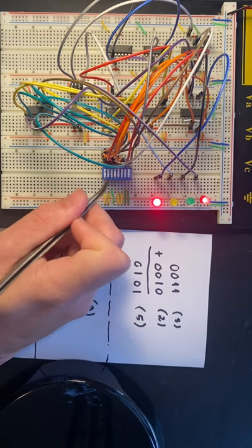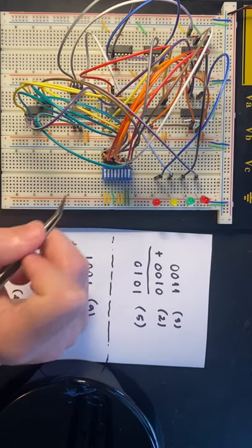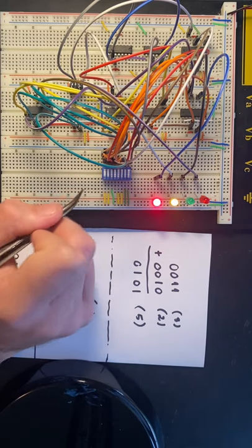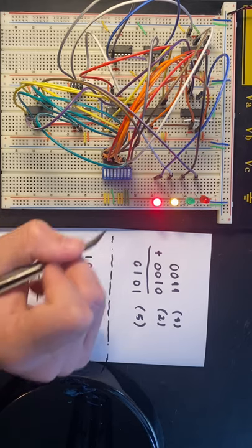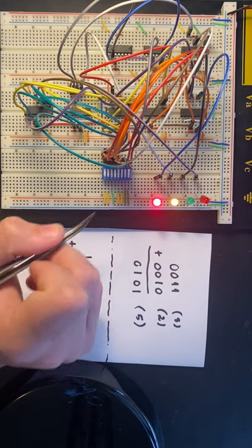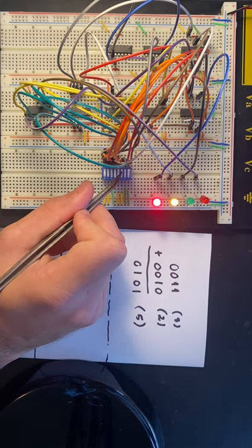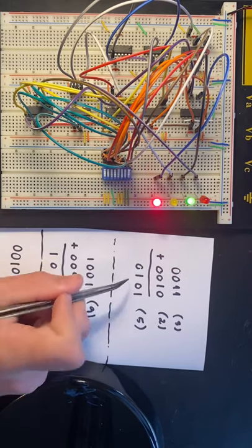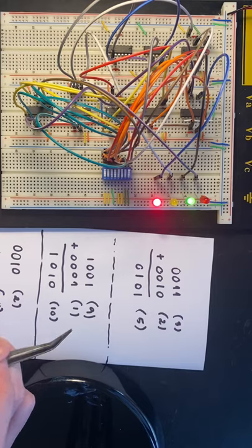Let me just reset again. We put in three here, which is 1100, and we put two for the second number, which is 01. As you can see, we get 0101, which is five, and that checks out.